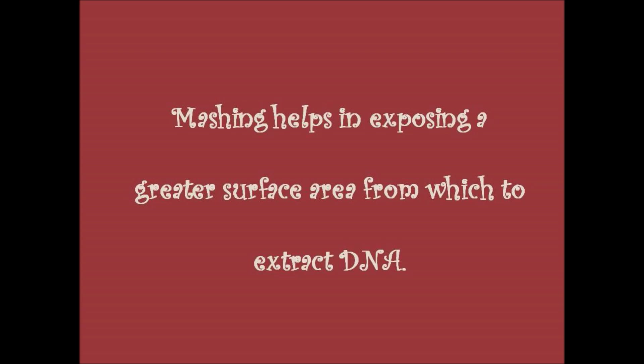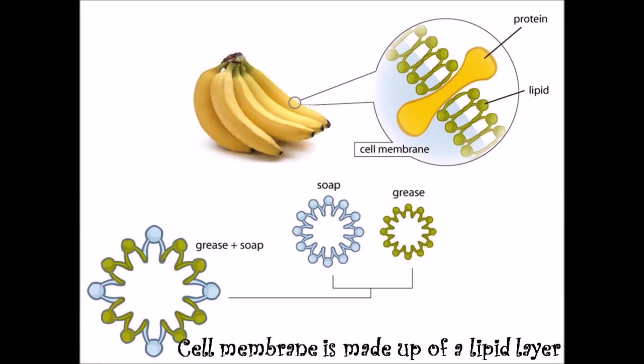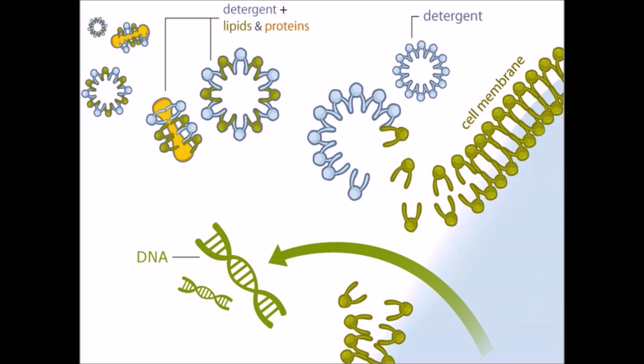While that stands, let us see why we need to do all these steps. The DNA is present inside the cell, and the mashing process helps in exposing a greater surface area from which to extract DNA. You might wonder: why did I add soap solution? Have you seen soap solution used to remove grease from vessels? For the very same reason, we use soap solution here. The cell membranes are made of a lipid layer — a fat layer — and in order to expose the nucleus of the cell, these lipid layers need to be dissolved or disrupted. For this purpose, the soap solution is used.